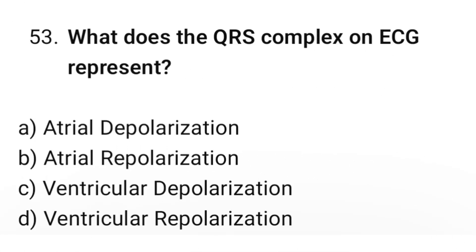Question number 53: What does the QRS complex on ECG represent? The correct option is C. Ventricular depolarization.